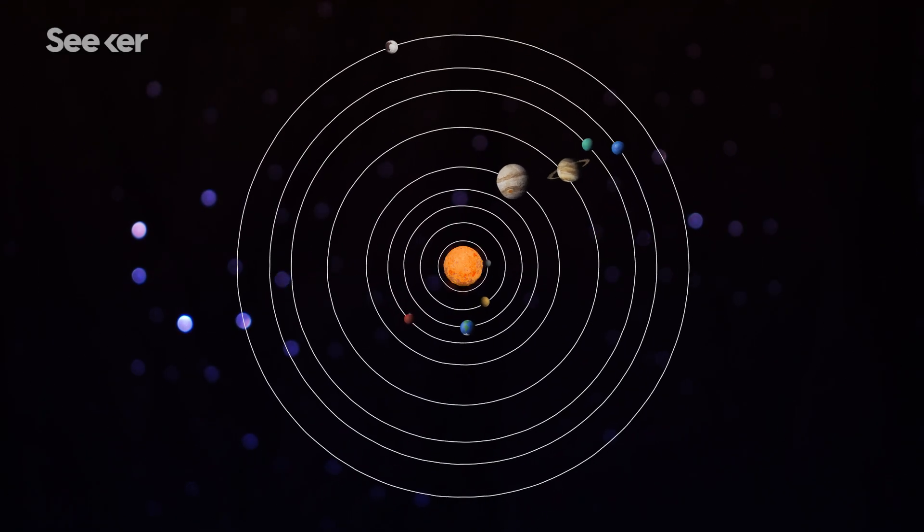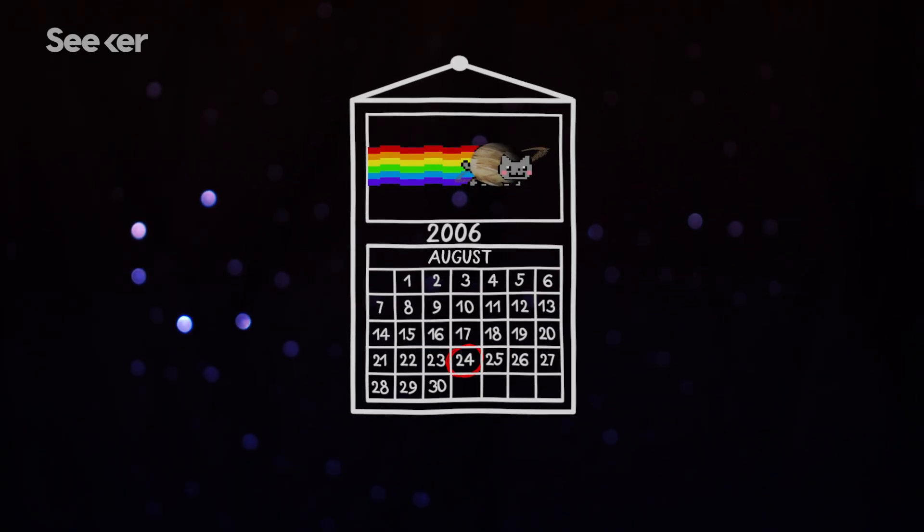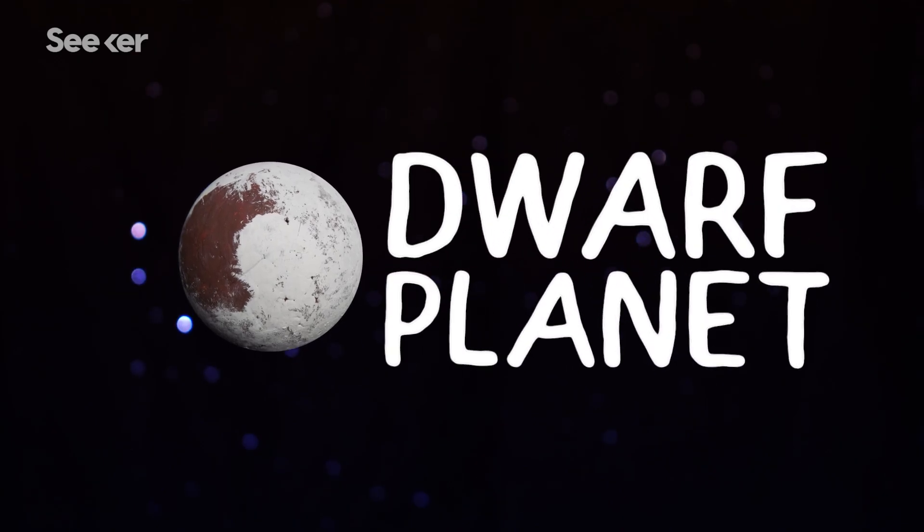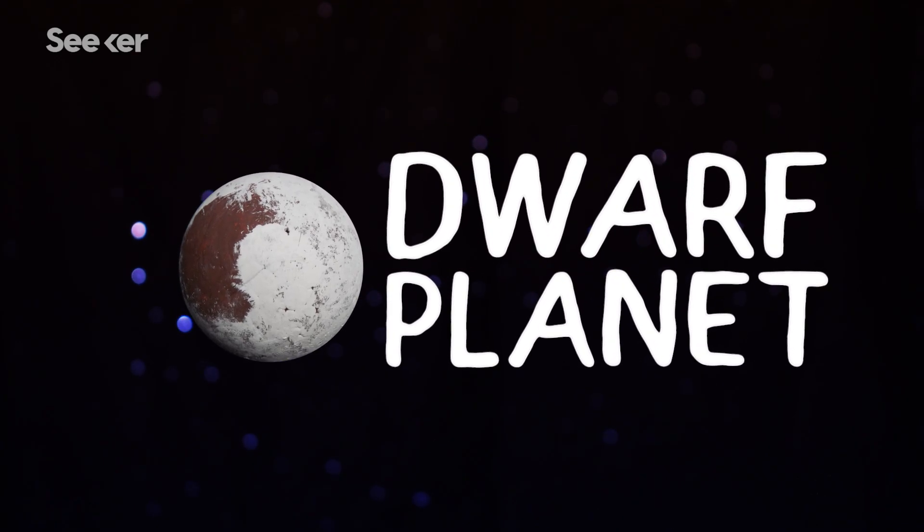There once was a time the solar system consisted of nine planets, but in 2006 the unthinkable happened. We lost the beloved planet Pluto and gained a whole new way to classify celestial objects, and our lives have never been the same.